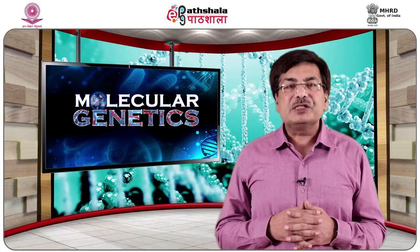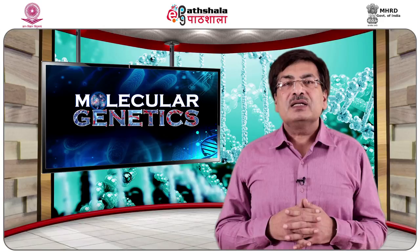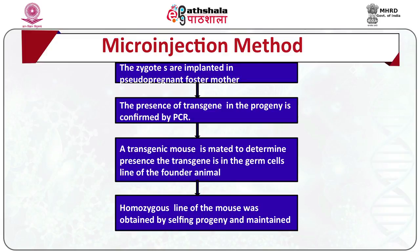Multiple copies of the transgenes integrate in a head-to-tail array at a random single chromosomal site. After inoculation, 25 to 40 eggs are implanted micro-surgically into a foster mother. Before implantation, the foster mother is mated with a vasectomized male. This makes the female pseudopregnant. In mice, copulation is the only known way to prepare the uterus for implantation.